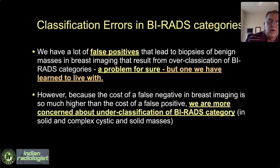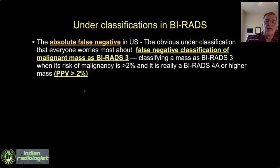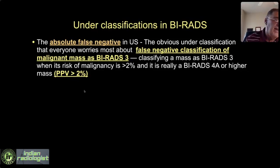We all recognize that the cost of a false negative is much higher than the cost of a false positive, so we really tune our algorithms to achieve adequate sensitivity. But even doing that, we can still get false negatives.